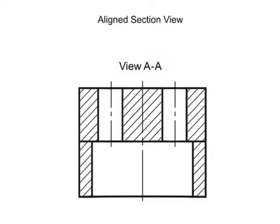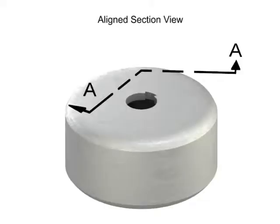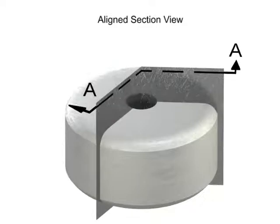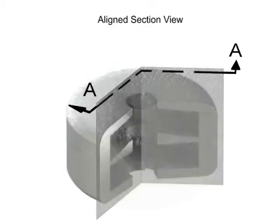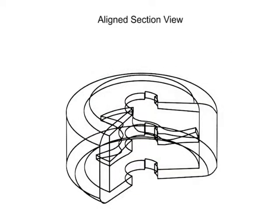For circular parts, the cutting plane will almost always pass through the center of the part, and then angle to another feature. Aligned views are typically used with complex or circular parts with interior features that do not appear in a straight line.